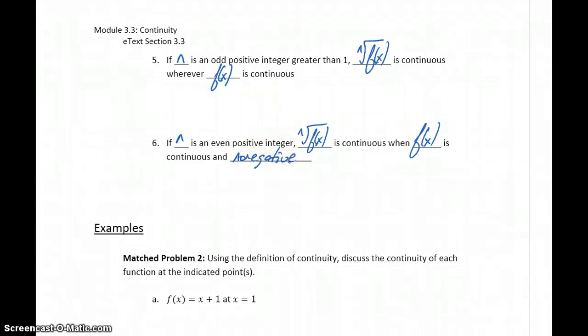These two parts of the theorem sound pretty similar, but the difference is when we're talking about an odd integer or an even integer. The difference is that if n is some even integer, so we're taking the second root, fourth root, sixth root, what we have to avoid is taking an even root of negative numbers.